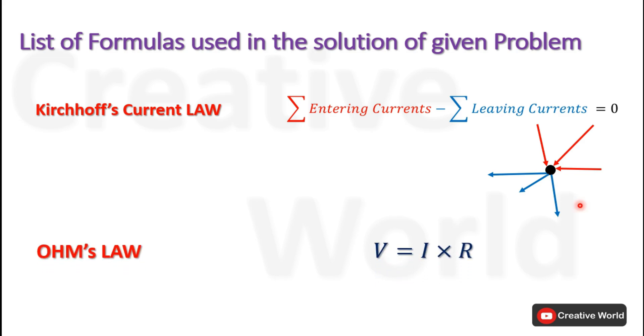We will also be using Ohm's Law. According to this law, the voltage across any resistance R is equal to the product of the current through it and the value of the resistance itself.